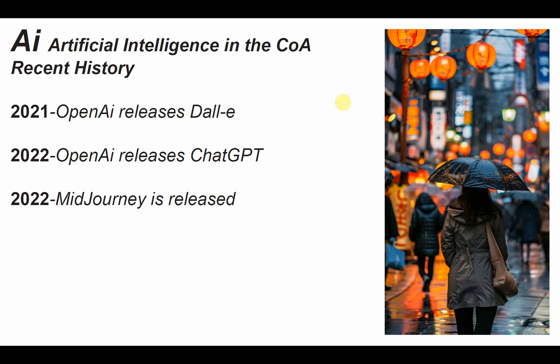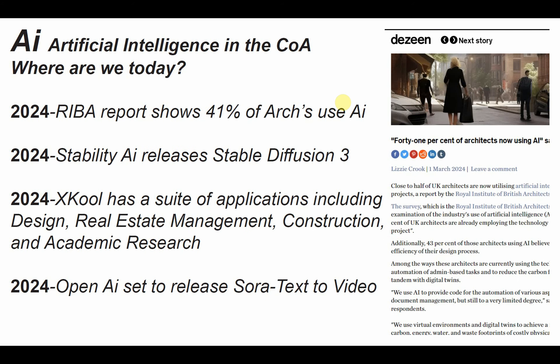The invention of LLMs, GANs, and diffusion models have brought us to what many think of as the AI revolution. In 2021, OpenAI released DALL-E; the next year it released ChatGPT, and Mid-Journey, the text-to-image generator, was released the same year. RIBA conducted a report showing that 41% of UK architects use AI. Stability AI released Stable Diffusion 3 to a select group. The company Xcool released its suite of AI tools covering design through construction management. And Sora is set to disrupt film, gaming, and architecture with its text-to-video generator.